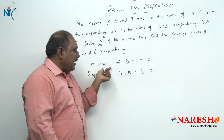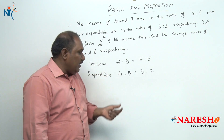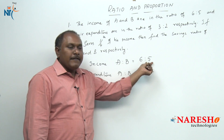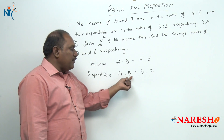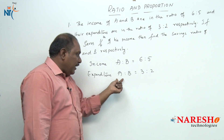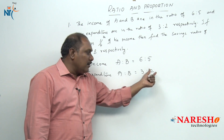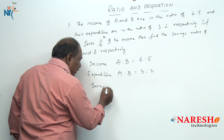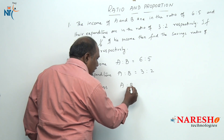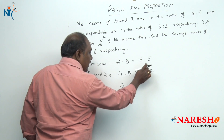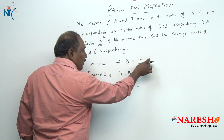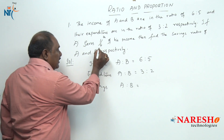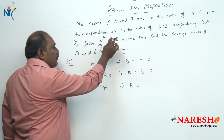When I say income of A and B are in the ratio of 6 is to 5, that means if A earns 6 rupees, B will earn 5 rupees. Their expenditures are in the ratio 3 is to 2 — if A spends 3 rupees, B will be spending 2 rupees. Do not directly subtract these ratios because the two are not dependent on each other. We have one more piece of information: A saves one-fourth of his income.